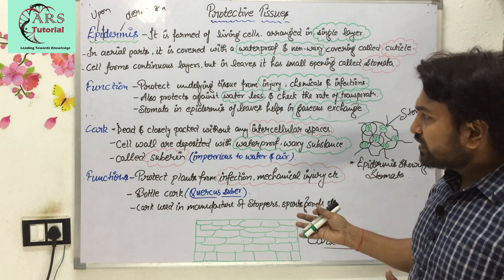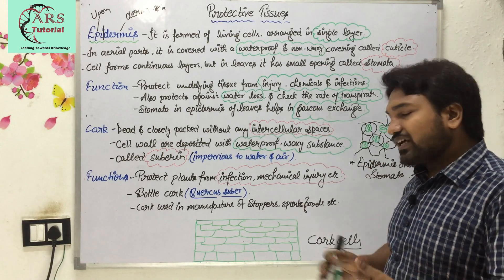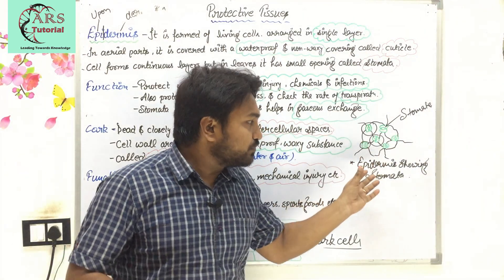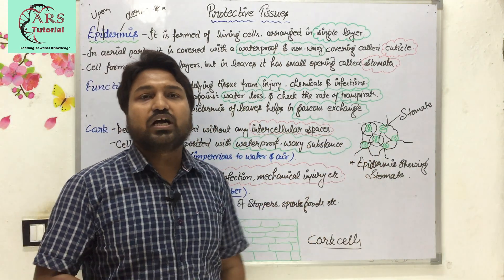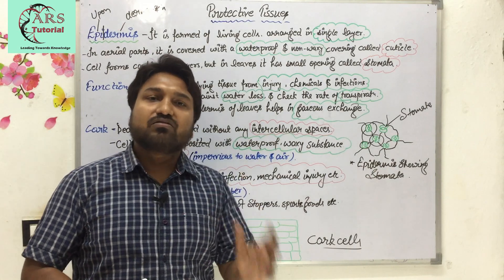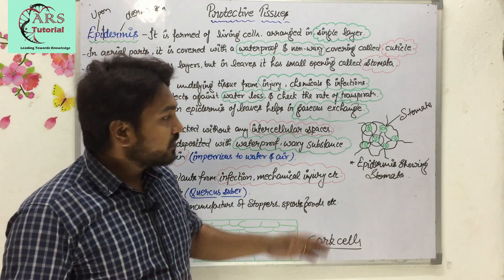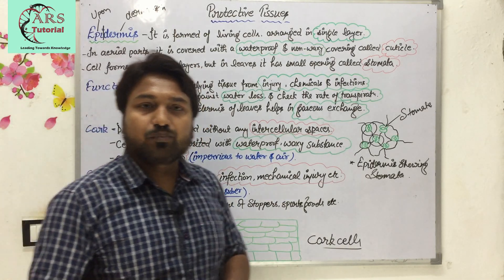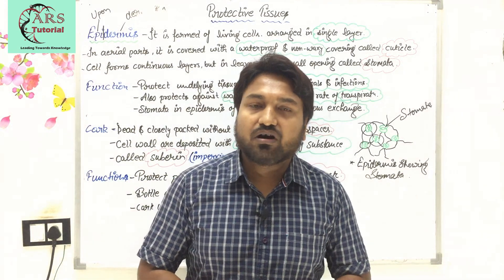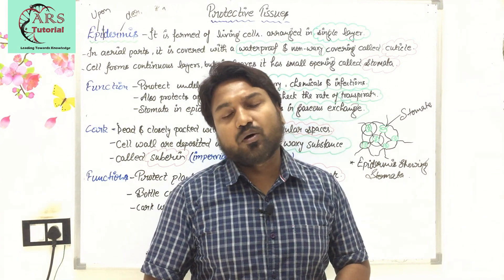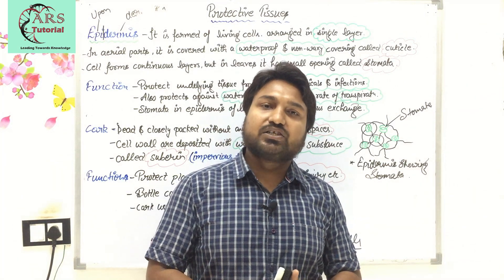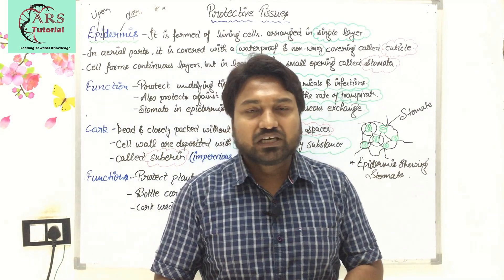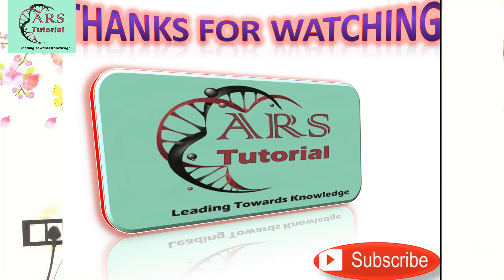In the diagram you can easily see that in cork cells there is no intercellular space, whereas in epidermis, stomata are present on the surface of leaves, which allow the exchange of gases during transpiration and photosynthesis. This is all about the protective tissue — epidermis and cork. In the next video we will discuss complex permanent tissue, that is xylem and phloem. Thank you to all of you for watching on AR Studio.